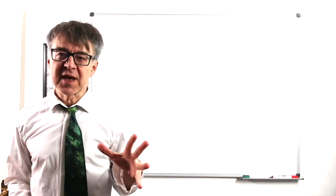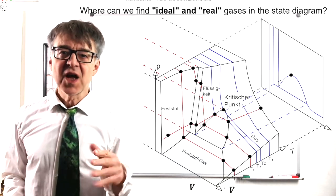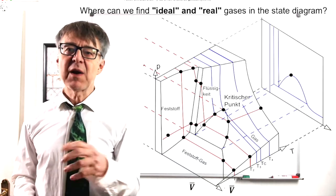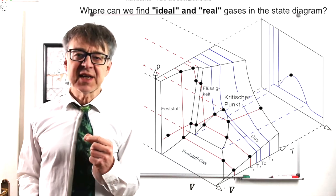We start with a phase diagram. In this case, a surface in PVT space of a pure substance, our leitmotiv for the lecture series. Where can we find ideal gases here?